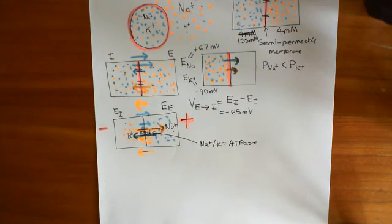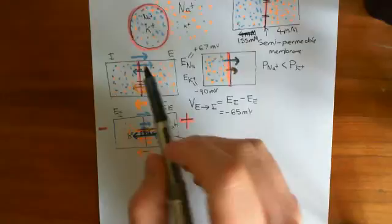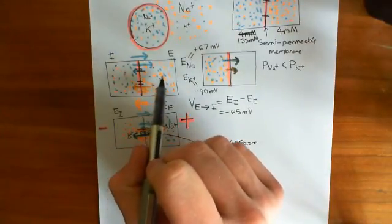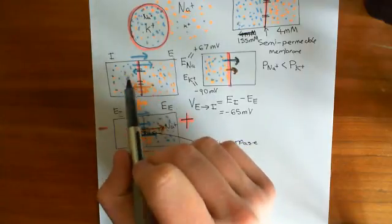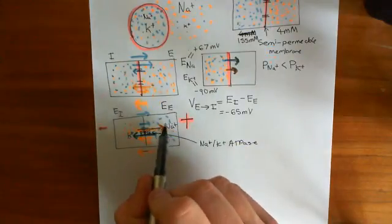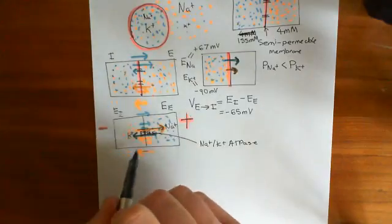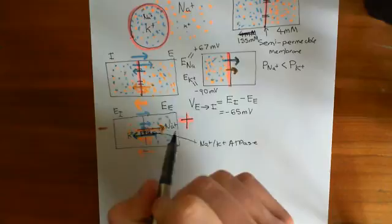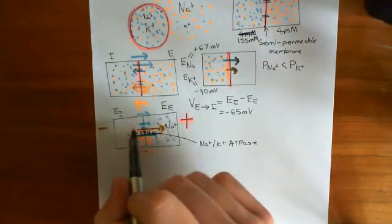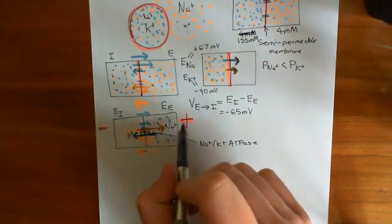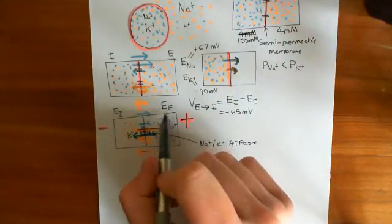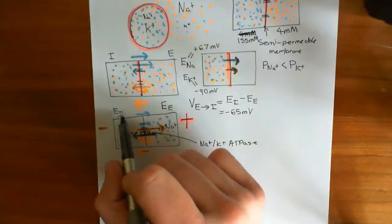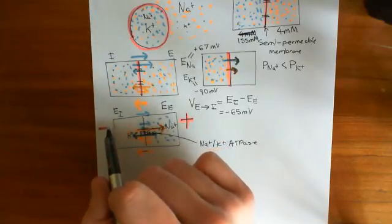Overall, you'll move positive charge from the intracellular compartment to the extracellular compartment in the form of potassium ions, because you will move more potassium out than sodium in. As that positive charge grows, the electrical potential difference will grow. The extracellular electrical potential will become bigger and bigger, and the electrical potential of the intracellular compartment will become more and more negative.